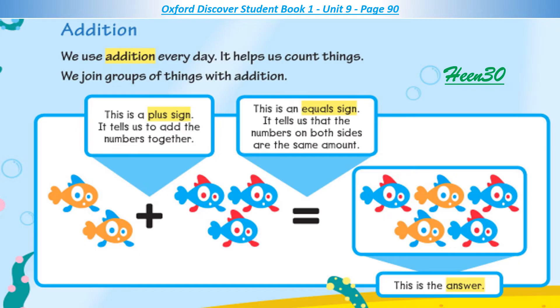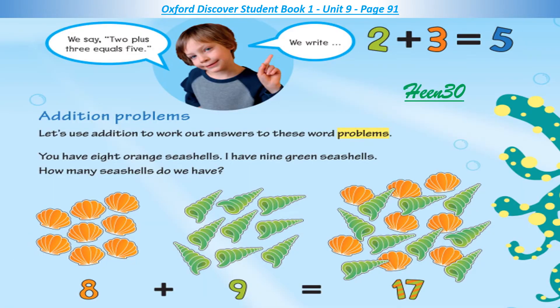Addition. We use addition every day. It helps us count things. We join groups of things with addition. This is a plus sign — it tells us to add the numbers together. This is an equals sign — it tells us that the numbers on both sides are the same amount. This is the answer. We say: 2 plus 3 equals 5. We write: 2 + 3 = 5.